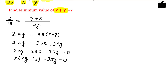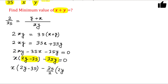Here starts the key step. You have the factor (2y minus 35). I want to factorize the remaining term so that I can also produce a factor of (2y minus 35). To do this, I take 35/2 common from the 35y term, and add and subtract 35 — that is, I add 35 and subtract 35 — keeping the equation equal to 0.